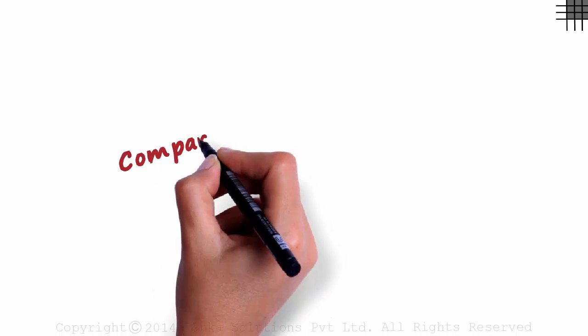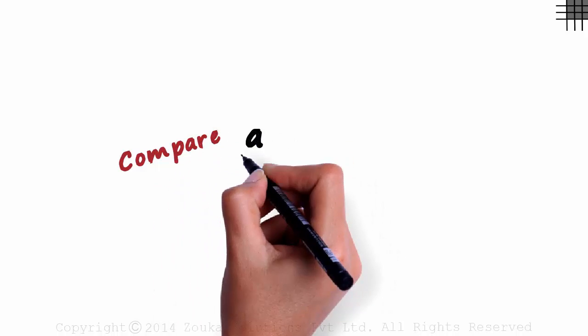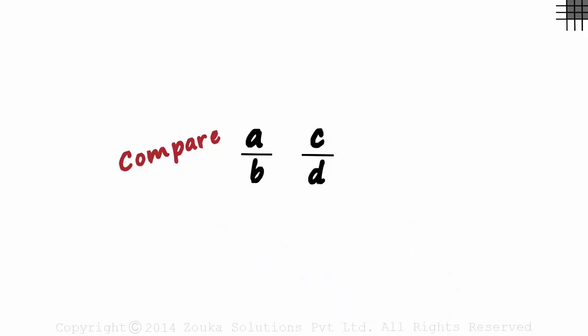How do you compare two fractions? Let's say the two fractions are in the form A by B and C by D. One way in which we can compare them is by making their denominator same. Once we make the denominator same, the fraction with the higher numerator is the bigger fraction.